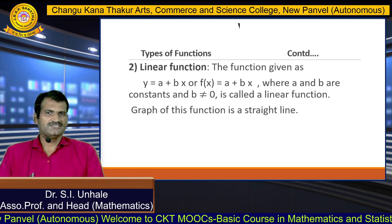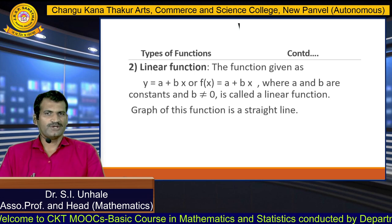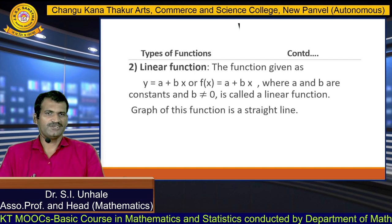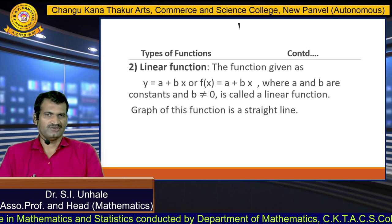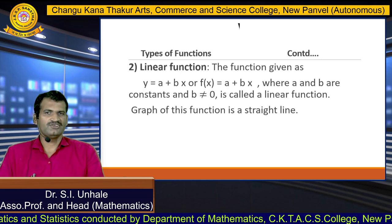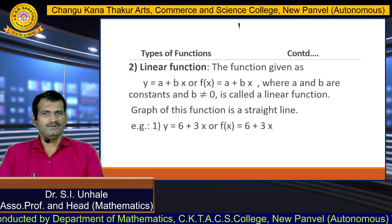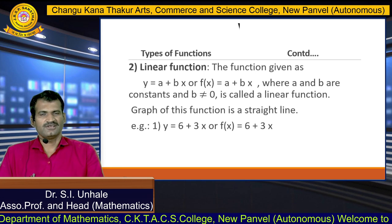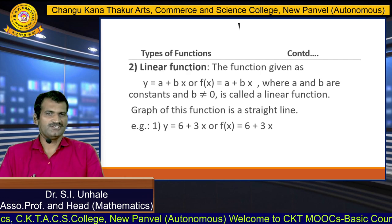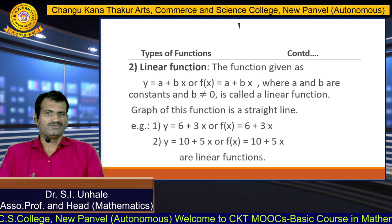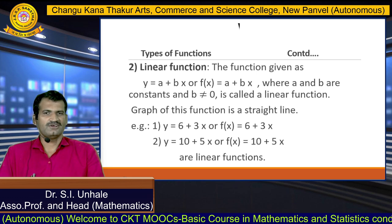The second type is the linear function. The function given as y = a + bx, or f(x) = a + bx, where a and b are constants and b is a non-zero constant, is called a linear function. If you draw the graph of a linear function, the graph is always a straight line. For example, y = 6 + 3x, or f(x) = 6 + 3x, is a linear function, where 6 and 3 are constants and x is the variable. Similarly, y = 10 + 5x or f(x) = 10 + 5x are also linear functions.